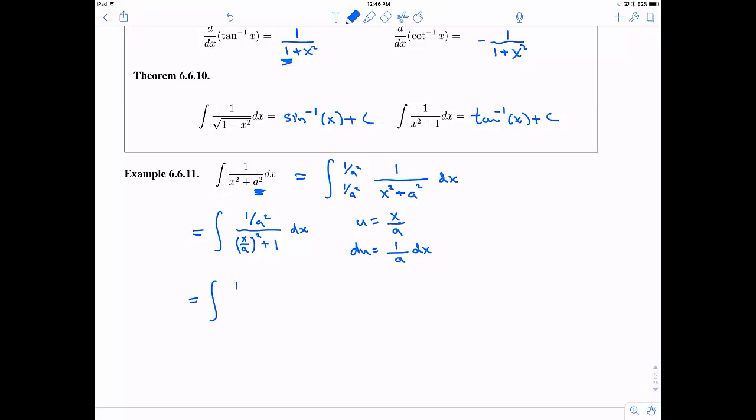So now if I substitute that in, well, it looks like one of my 1 over a's gets eaten up, but there's another one there still. And then let's see, instead of x over a quantity squared, it's going to be u squared plus 1. So now this right here, I know this is going to become tangent inverse.